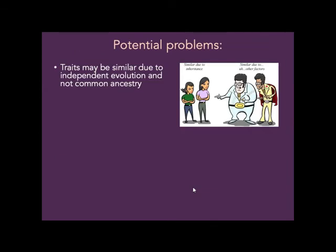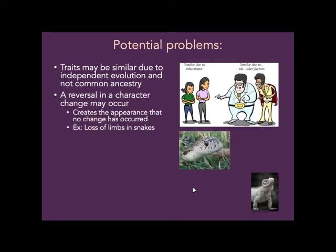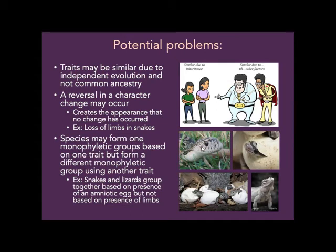Here are some potential problems when building trees. You could find a trait that's similar due to independent evolutionary events and not due to common ancestry. Sometimes you get a reversal in a character change that makes it look like nothing happened — for example, the loss of limbs in snakes. Snakes have no legs; lizards have legs. If you looked at number of limbs to categorize organisms, you'd say snakes and lizards are quite different. But their amniotic eggs are extremely similar. So species can form one monophyletic group based on one trait, but a different monophyletic group using another trait.